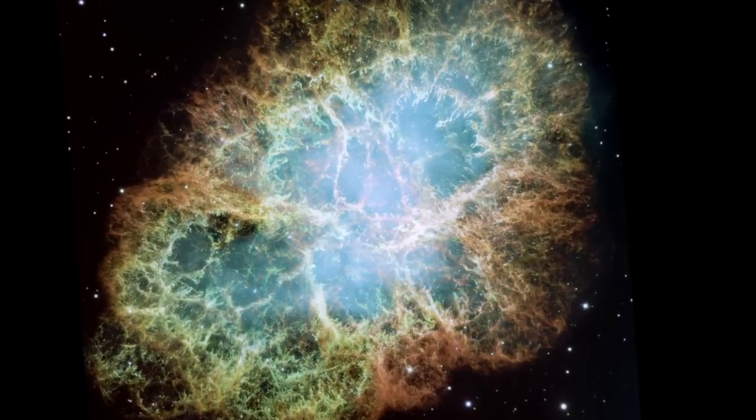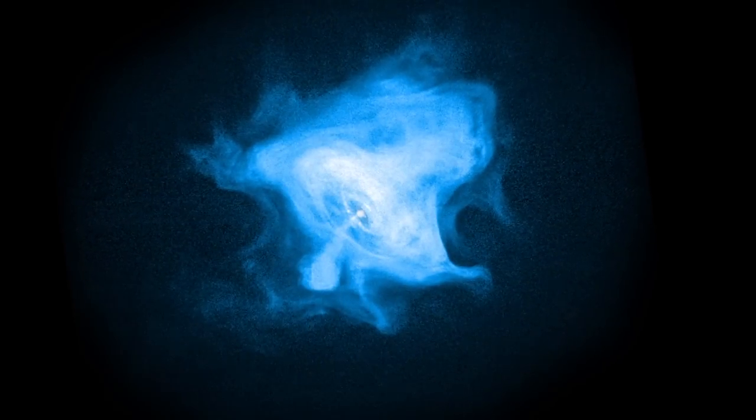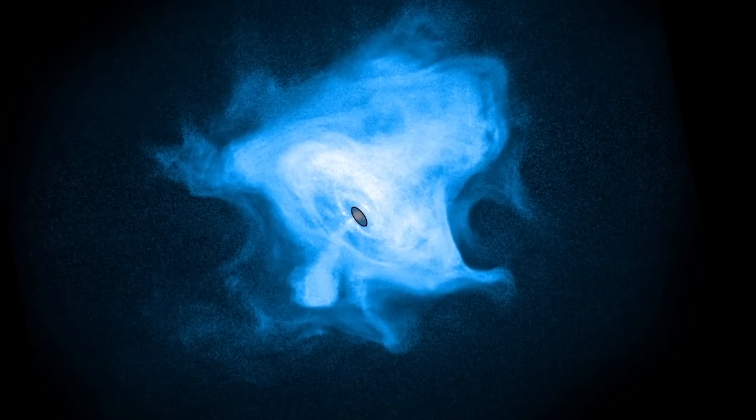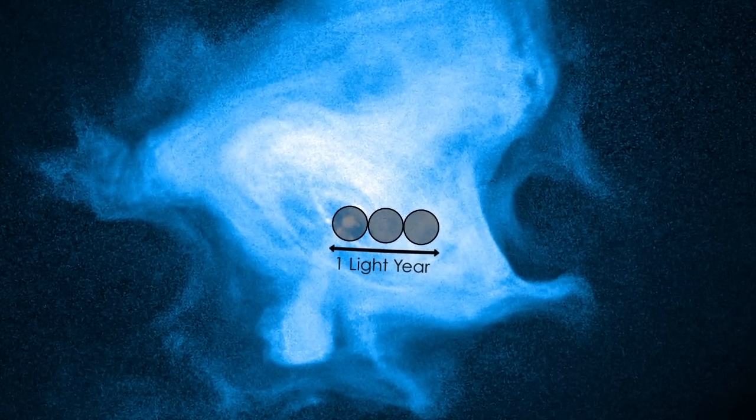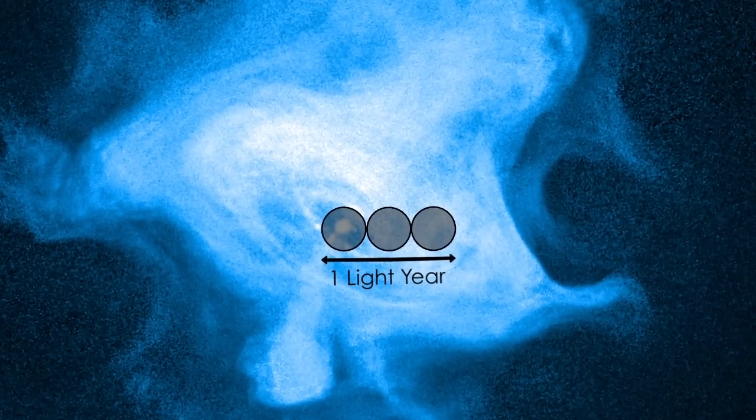This hints that whatever's causing the flare is happening within about a third of a light year from the pulsar. And rapid changes in the rise and fall of gamma rays imply that the emission region is very small, comparable in size to our solar system.